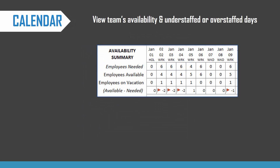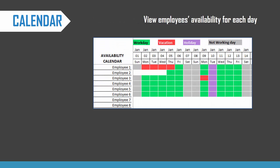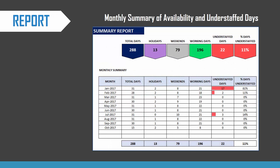The automated calendar will show the overall availability of the team and highlight any understaffed or overstaffed days. You will see red flags wherever there are understaffed days. The calendar also shows each employee's availability every day in a visual format. The report is a monthly summary of availability and understaffed days, and can show up to 12 months at a time.